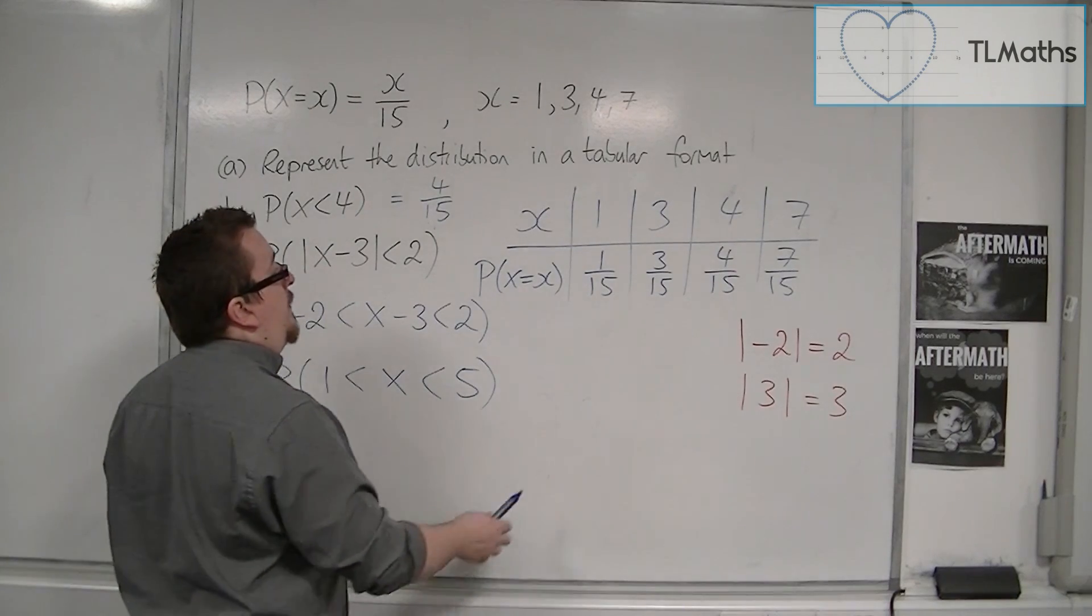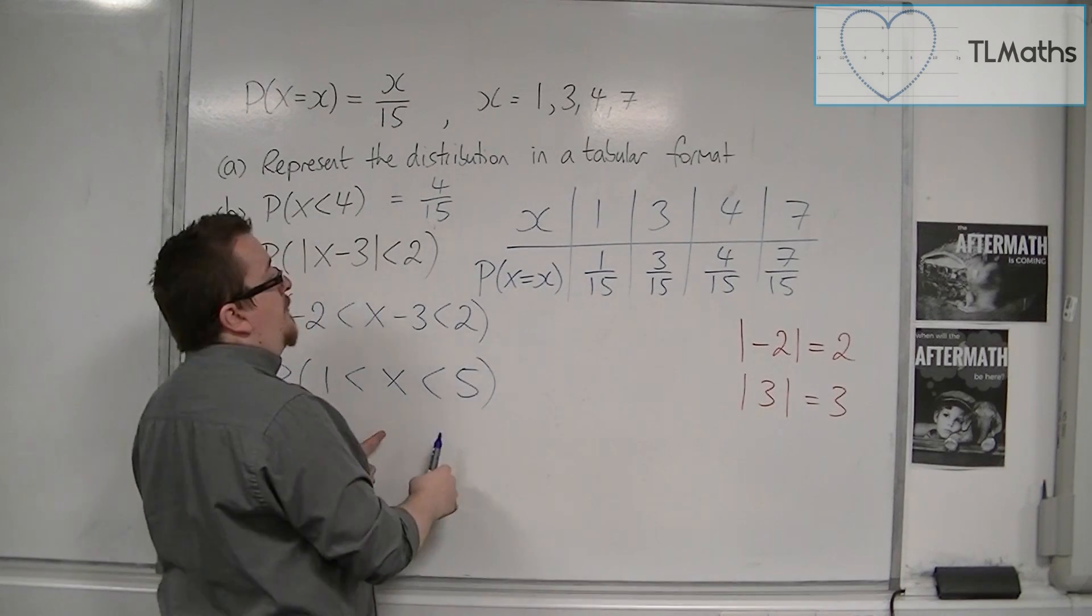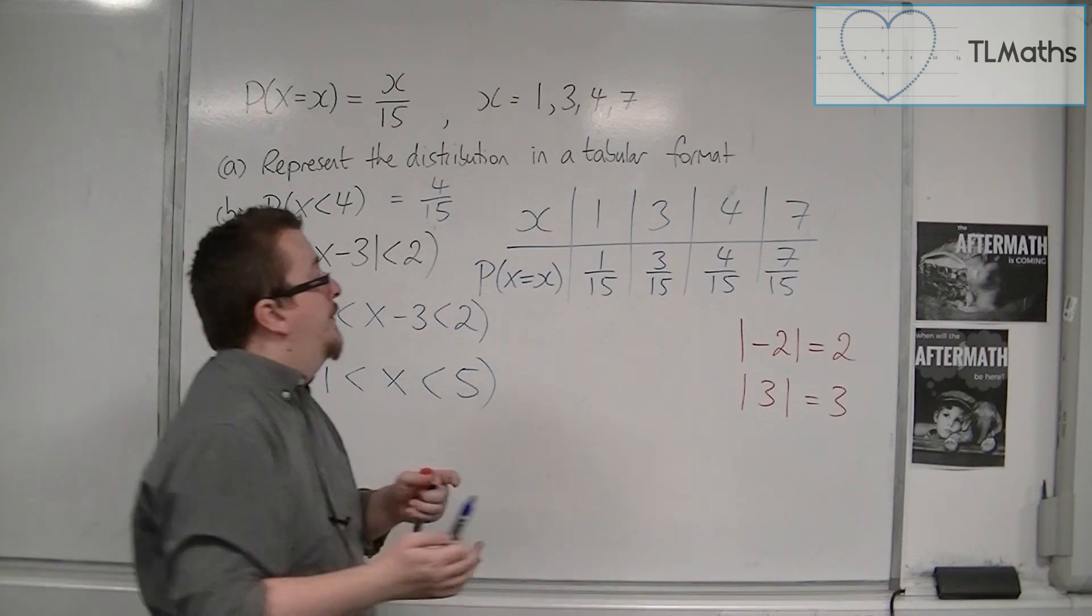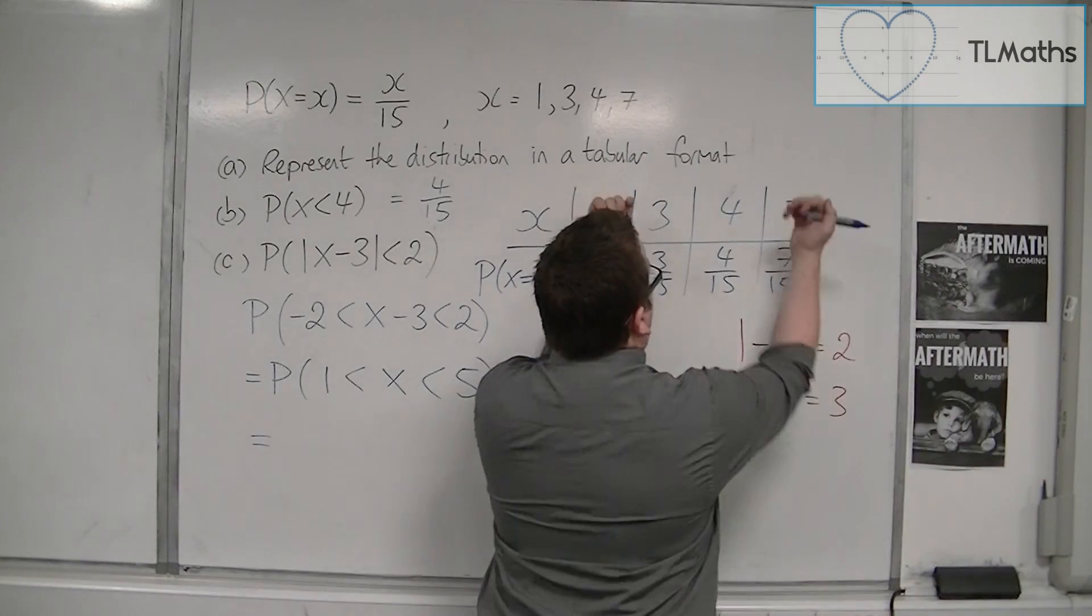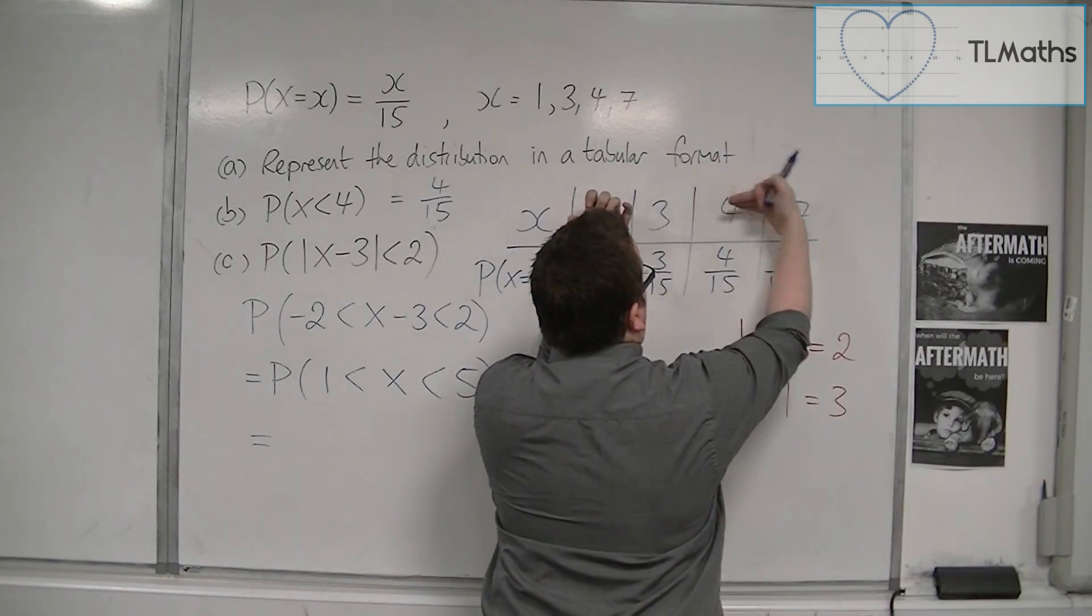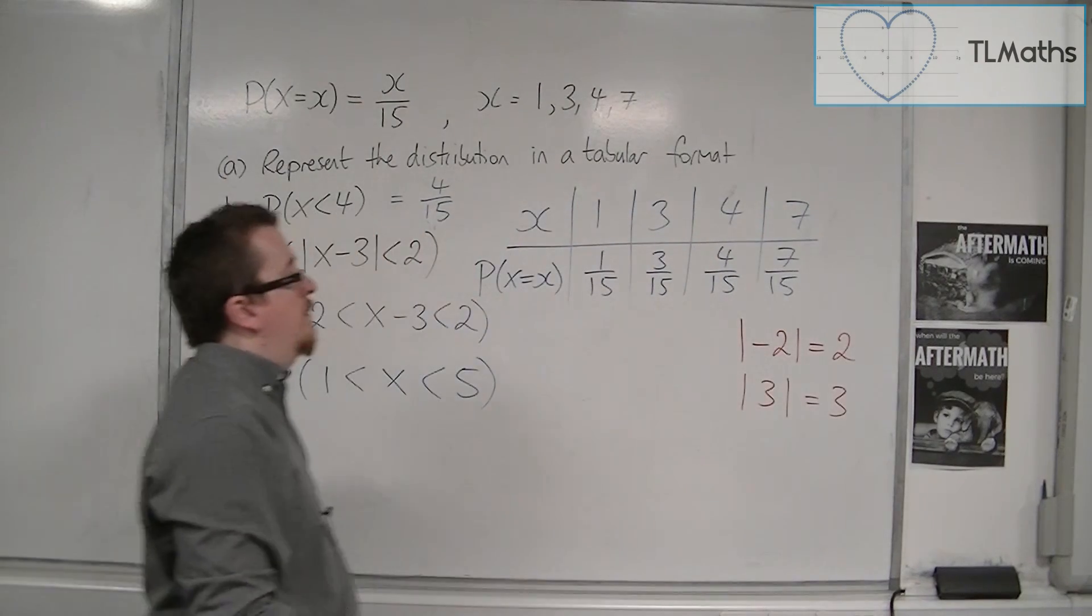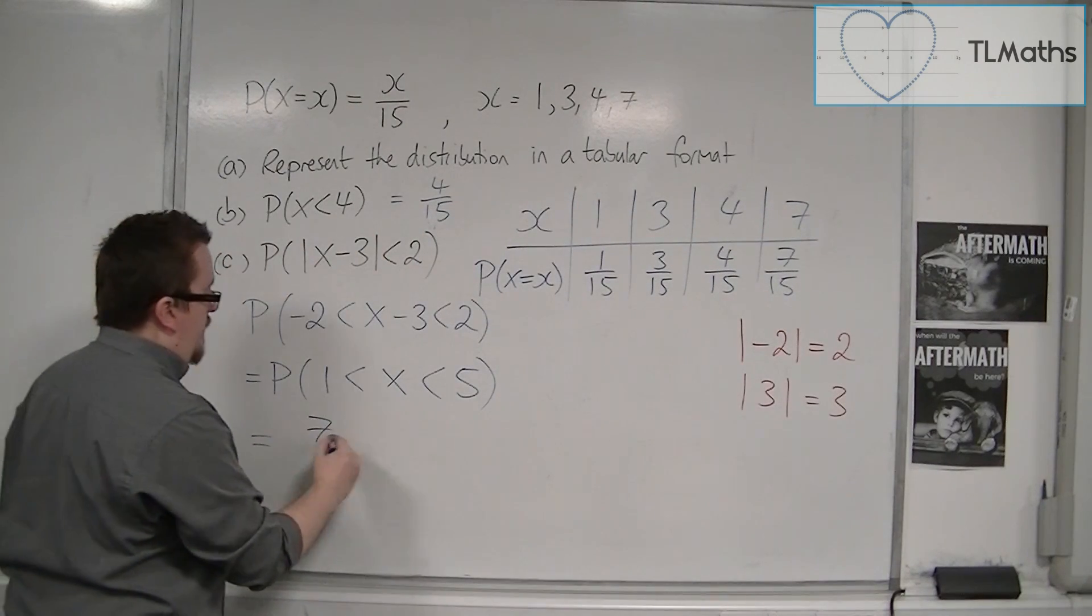So for us, if it's 1 to 5, not including the end points, so we're not including 1, we're definitely not including 7, and so it's these two probabilities added together. So we've got 3 plus 4 is 7 over 15.